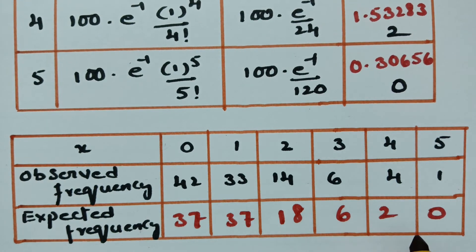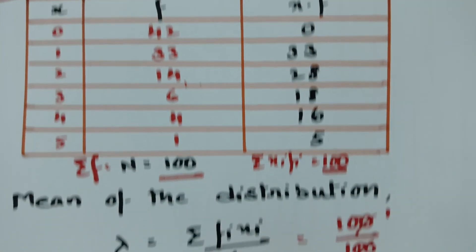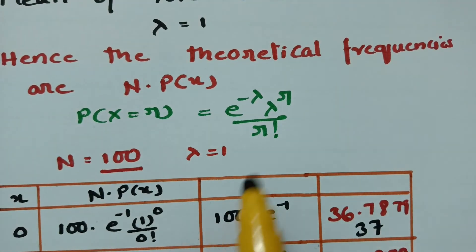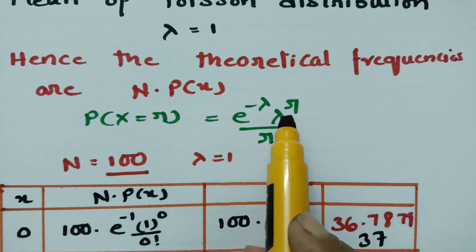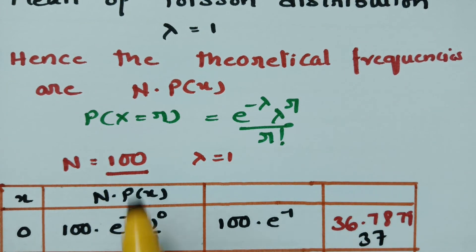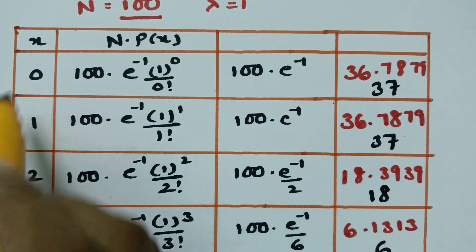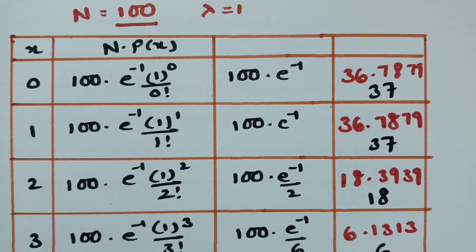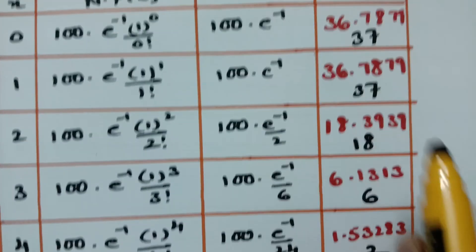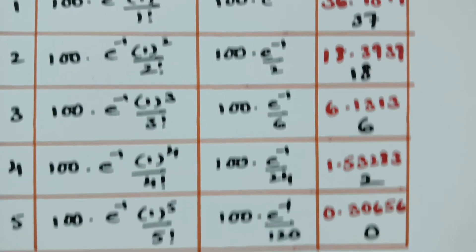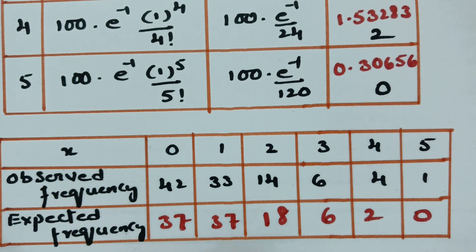This is how we solve the problem using the given data. First find the mean — here lambda equals 1 — then apply the Poisson distribution formula n into p(x) for all x values with lambda equals 1 and n equals 100, giving the expected frequencies. Thank you so much. I will be uploading videos on normal distribution — please go through those videos, and if you like them, please pass it on to your friends and subscribe to this channel.